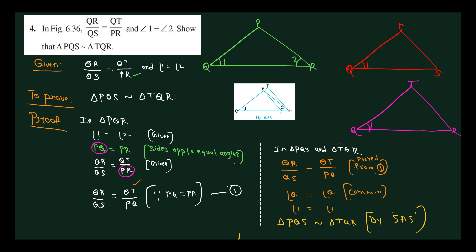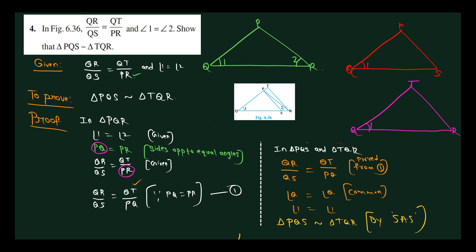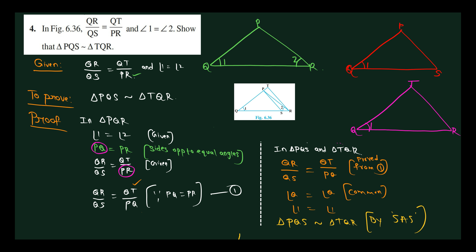We already proved that QR by QS equals QT by PQ. Corresponding sides are in the same proportion, same ratio: QR by QS equals QT by PQ. And the angle Q is common between the two sides — angle Q equals angle Q, this is common.